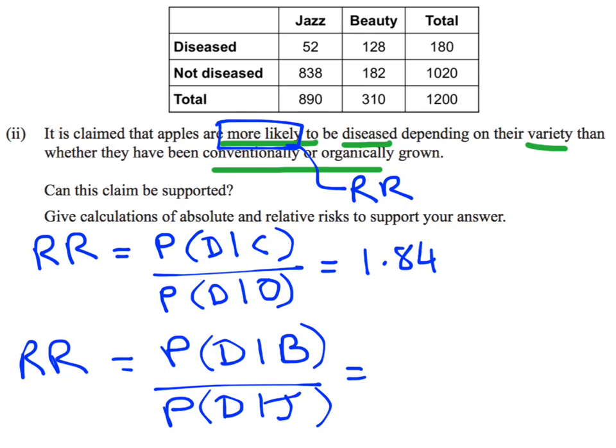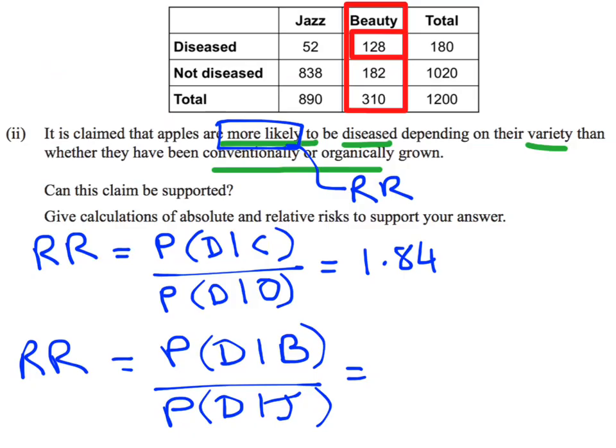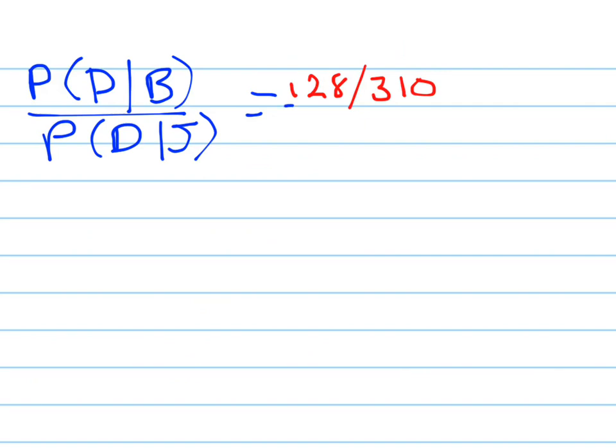So I want to look at my beauty apples here. From the beauty apples, I've got 128 of them that are diseased out of the 310. So that's my top probability there, 128 out of the 310 beauty apples. Then I'm going to look at my jazz apples. I've got 52 of those jazz apples that are diseased out of the 890. So the conditional probability underneath is 52 out of the 890.